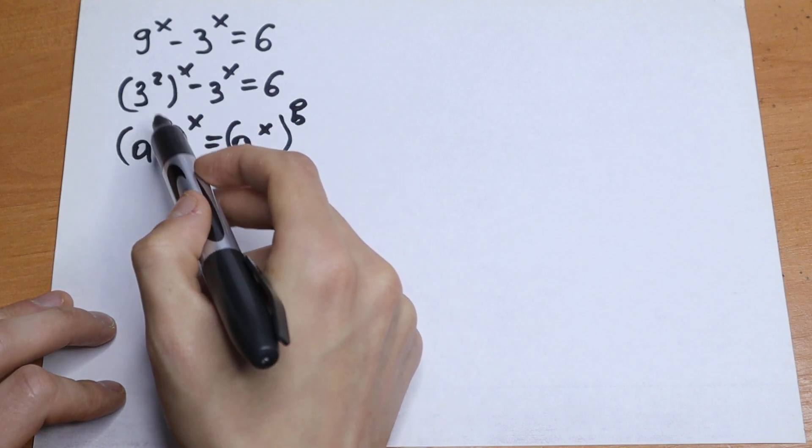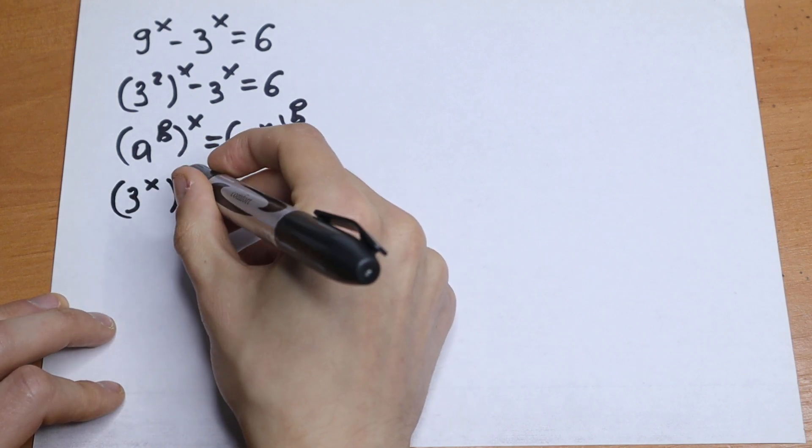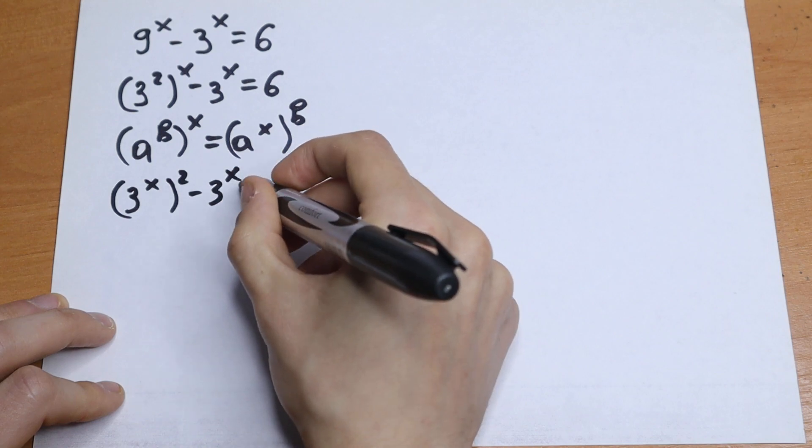Let's use this rule right here. This is our b, this is our x. So let's swap this: 3 to the power x squared minus 3 to the power x equals 6.